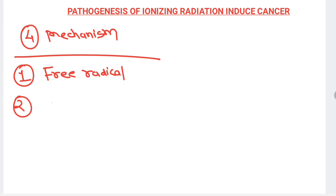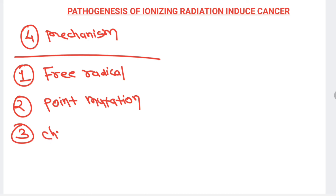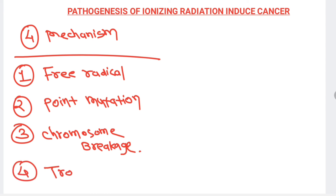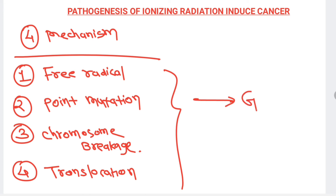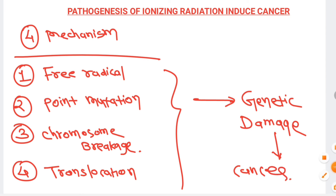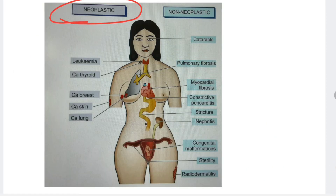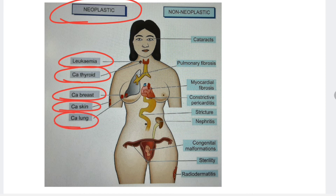There are four mechanisms by which ionizing radiation causes cancer: one, free radical formation; two, point mutation; three, chromosomal breakage; and four, translocation — meaning transfer of genetic material from one part of a chromosome to another. All of these cause genetic damage leading to cancer development.